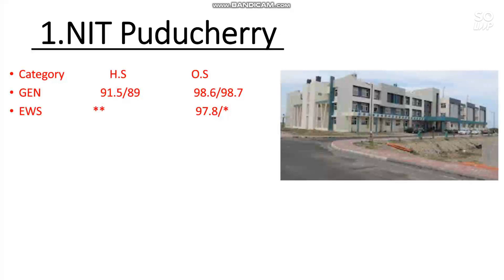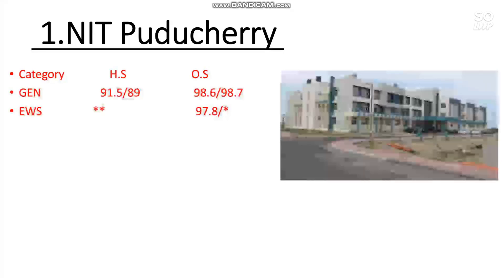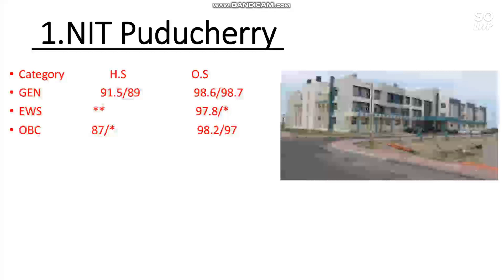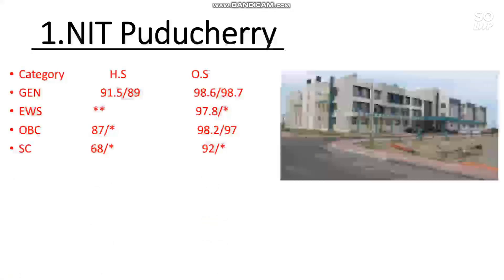Wherever you find a star mark, that means that category is not reserved in that particular NIT. For EWS other state male, 97.8 percentile is required, and no seat for female. For OBC other state: 98.2 percentile for male and 97 percentile for female. For SC: 92 percentile, and for ST: 95 percentile.